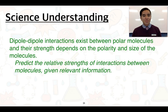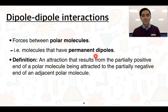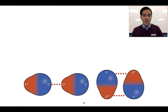The next science understanding is about dipole-dipole interactions and what factors can influence their strength. It's important to note that dipole-dipole interactions are only formed between polar molecules — in other words, between molecules that have permanent dipoles. A dipole-dipole interaction is an attraction that results from the partially positive end of a polar molecule being attracted to the partially negative end of an adjacent polar molecule.